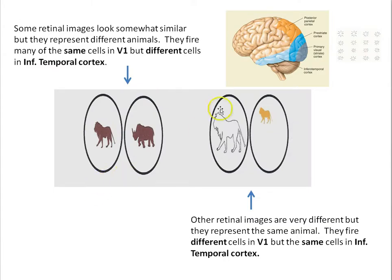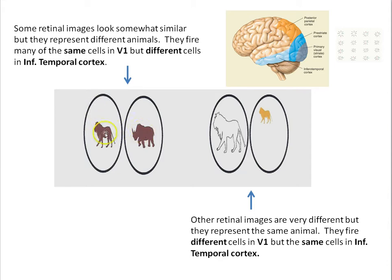Another way to understand the difference between preferred stimuli in the primary visual cortex versus further along in the inferior temporal cortex is to consider two comparisons. Some retinal images look somewhat similar but represent different animals — like a lion and a rhino. They fire many of the same cells in V1, but different cells in the inferior temporal cortex. Conversely, other retinal images are very different but represent the same animal — they fire different cells in V1, but the same cells in the inferior temporal cortex.